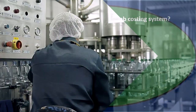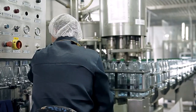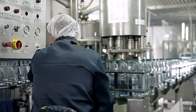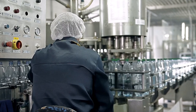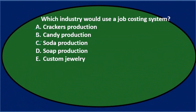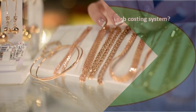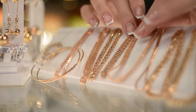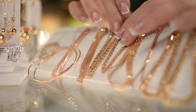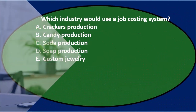Soda production — same type of thing. All the sodas are pretty much the same; we're not going to apply a job cost to soda, unless we're doing some type of customization, some kind of non-mass-production soda. And then soap — same kind of thing; most of it would be the same unless we're doing some kind of specialty type of thing. That leaves us with custom jewelry. Basically, anything that says 'custom' in it is probably going to be the answer in this type of question when we're looking for job cost versus process cost.